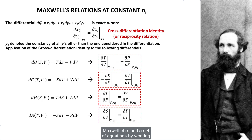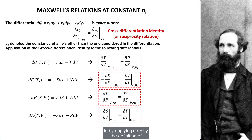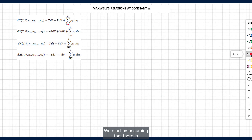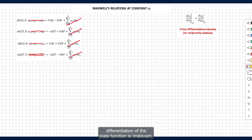Maxwell obtained a set of equations by working graphically on the Carnot cycle in the PV diagram. An alternative and quicker way to obtain the same set of equations is by applying directly the definition of exact differential to the fundamental equations of thermodynamics. State functions such as internal energy, enthalpy, Helmholtz energy, and Gibbs energy are exact differentials and benefit from special mathematical properties. Starting from the assumption of no change in composition, state functions benefit from the cross differentiation identity, which states that the order of differentiation is irrelevant. Applying this identity to the fundamental equations of thermodynamics renders Maxwell's relations.